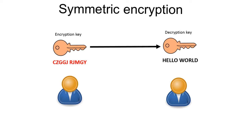There is, however, always a danger when using symmetric encryption that the message can be easily cracked by either the interception of the key, or by simply duplicating the key production process to acquire a copy of the key. Due to this fact, a lot of systems which need to send very critical information such as online payment details use asymmetric encryption, which is a whole lot more secure.